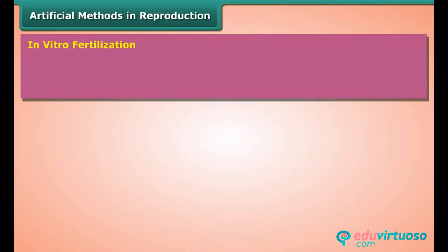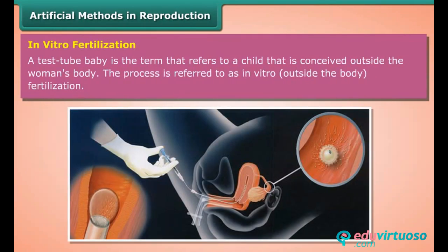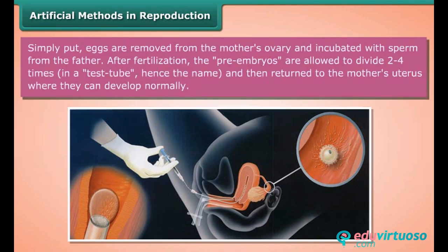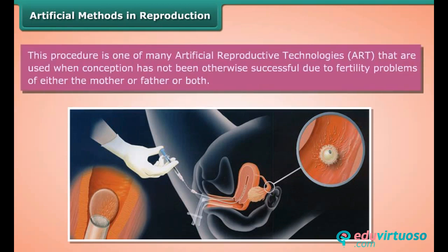In vitro fertilization: a test tube baby is the term that refers to a child conceived outside the woman's body. The process is referred to as in vitro — outside the body — fertilization. Eggs are removed from the mother's ovary and incubated with sperm from the father. After fertilization, the pre-embryos are allowed to divide two to four times in a test tube, then returned to the mother's uterus where they develop normally. This procedure is one of many artificial reproductive technologies used when conception has not otherwise been successful due to fertility problems in either or both parents.